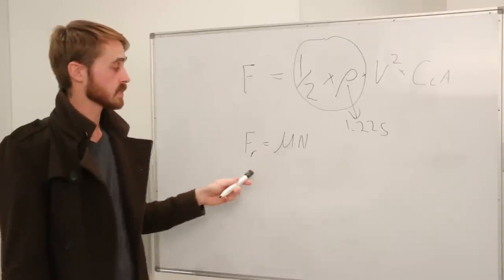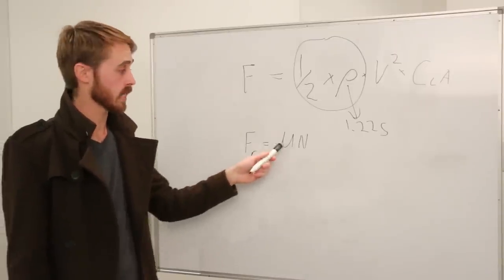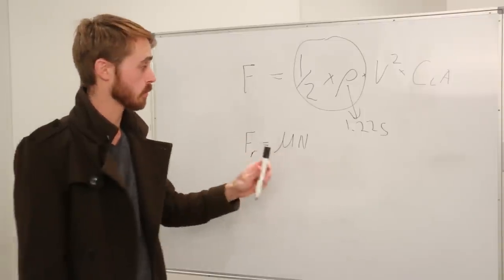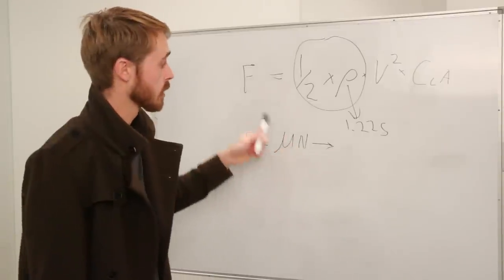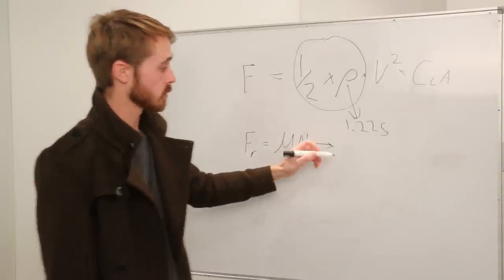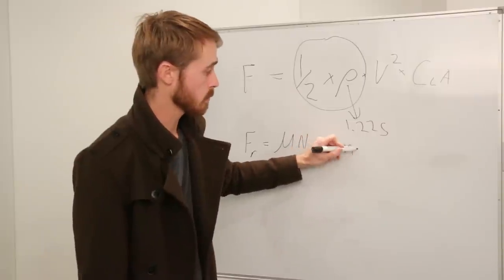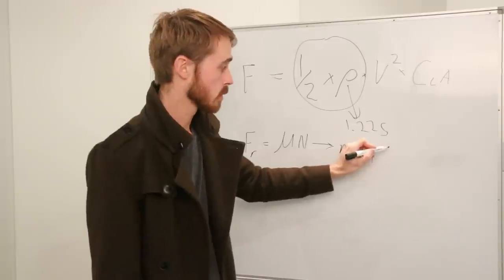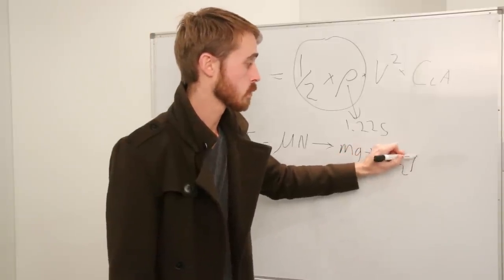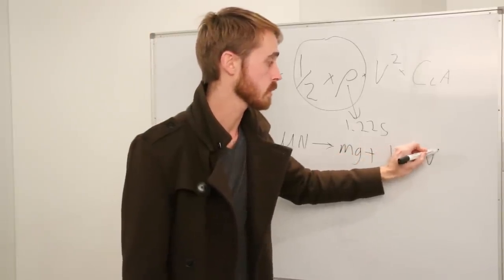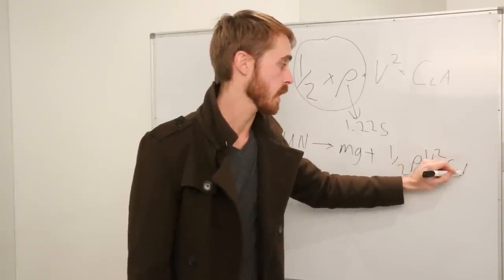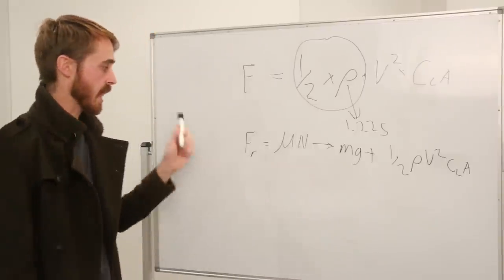So going back a bit we can see that our grip or our friction force equals mu N, coefficient of friction times the normal force. So this normal force equals mass times the gravity plus the downforce. So we've got M G plus a half rho V squared C L A. So that's what we've got for that.